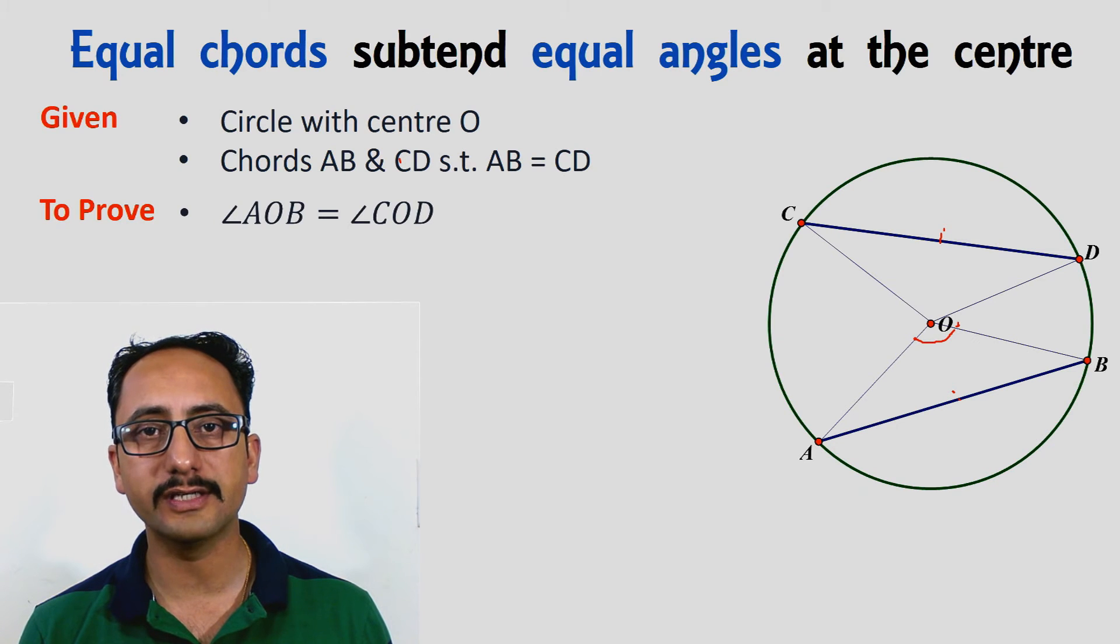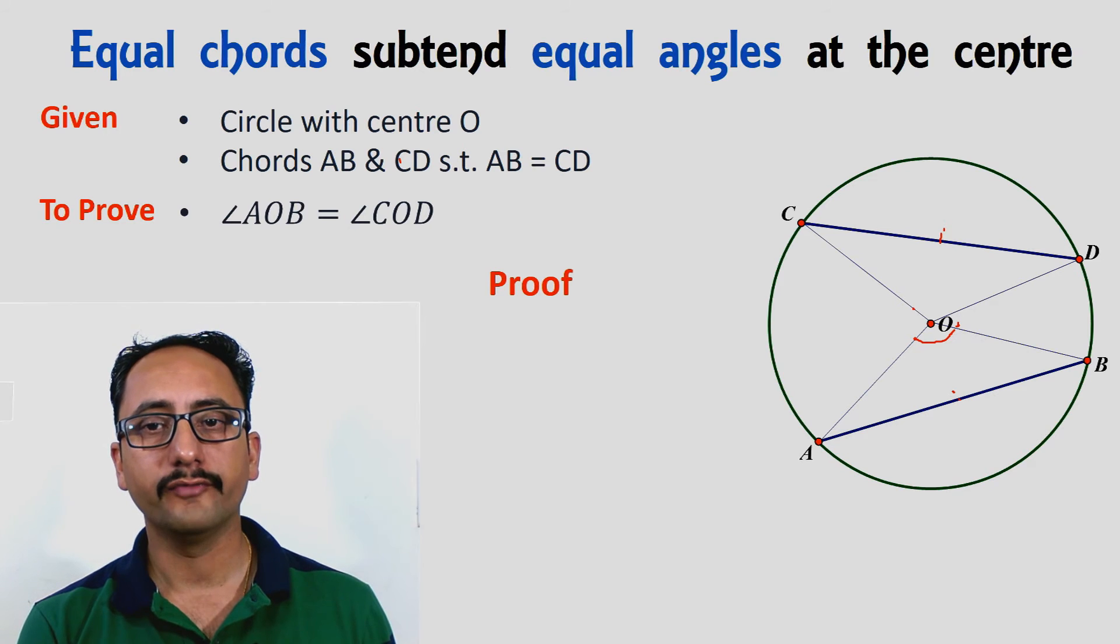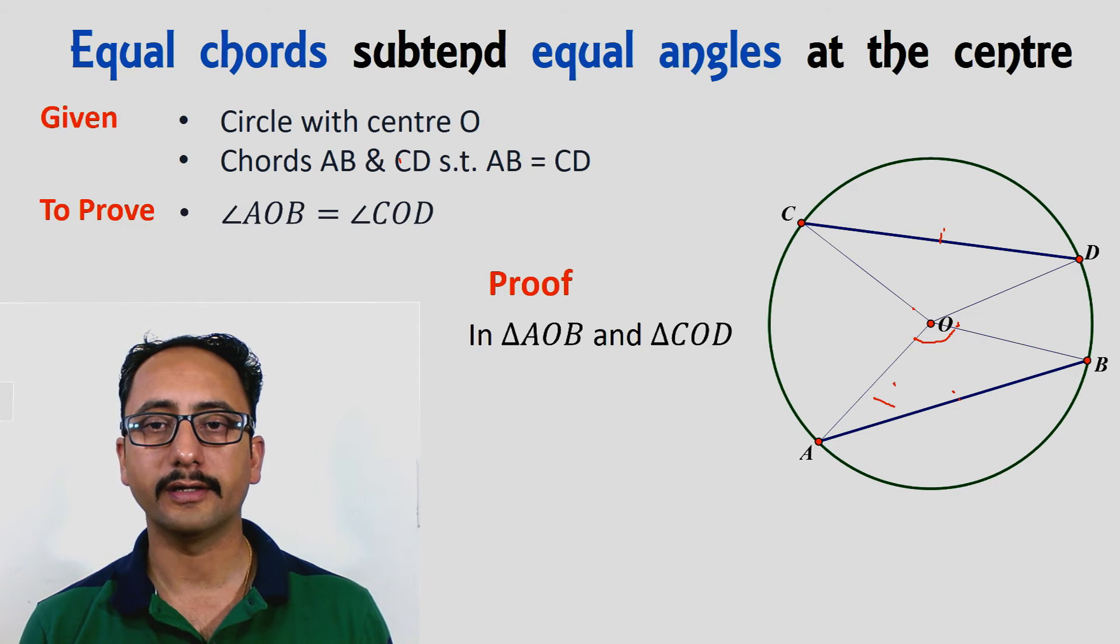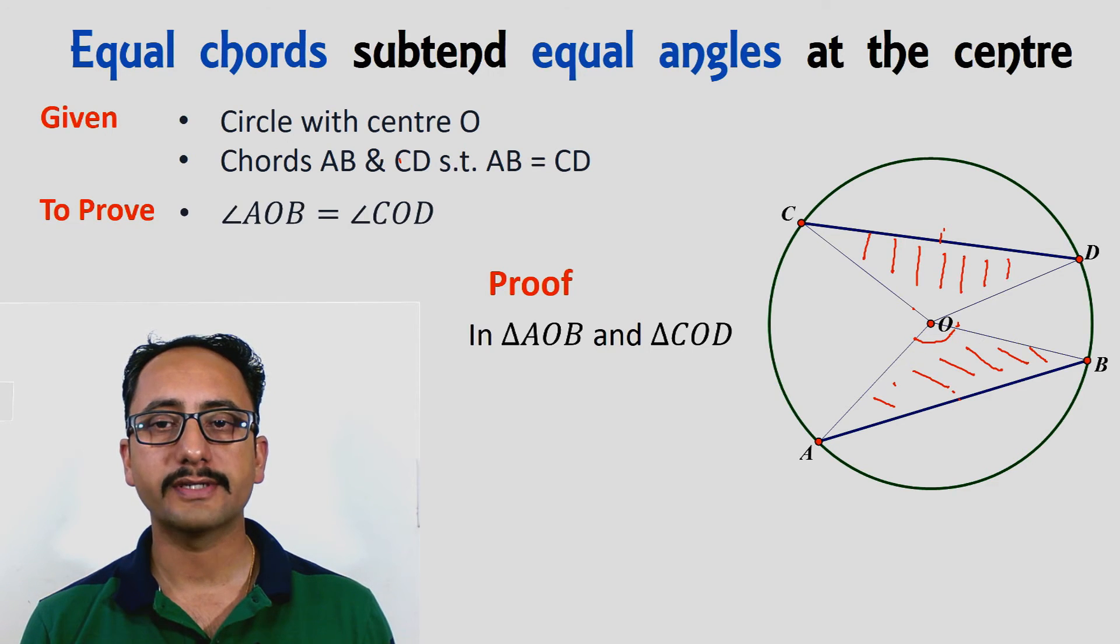Now proof: we will be starting with the triangles, triangle AOB and triangle COD. Step by step we will prove that these triangles are congruent.